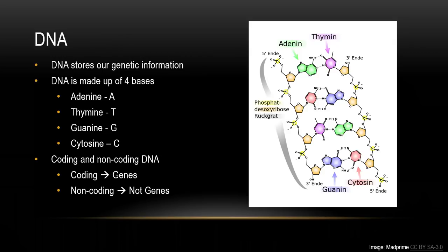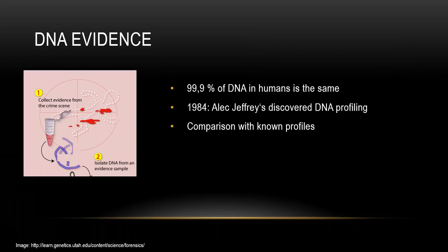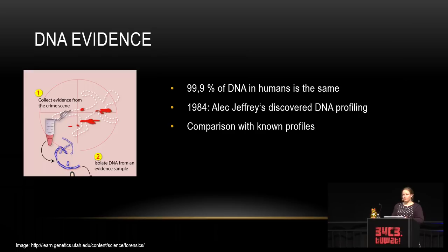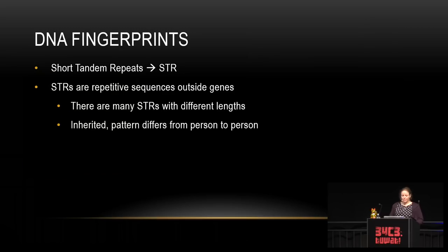Es gibt kodierende und nicht kodierende DNA. Die kodierende DNA sind Gene – das, was man in der Expression sehen kann, also wie du aussiehst und was dein Körper kann. Die non-coding DNA ist kein Gen. DNA wird als Beweis für Straftaten genutzt, wobei 99,9% unserer DNA für alle Menschen gleich ist. 0,1% sind anders und unterscheiden sich von Person zu Person. 1984 hat Alec Jeffreys das DNA-Profiling erfunden und verstanden, dass man dieses 0,1% nutzen kann, um Menschen zu identifizieren oder Verwandte zu finden.